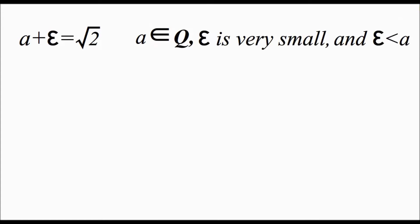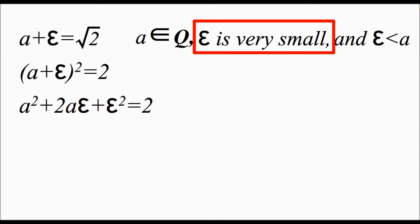If we square both sides, then a plus epsilon all squared equals 2, and then a squared plus 2a epsilon plus epsilon squared equals 2. Now remember, comparing to the other terms in the equation, epsilon is very small, so epsilon squared is even smaller. Therefore, epsilon squared is approximately 0.